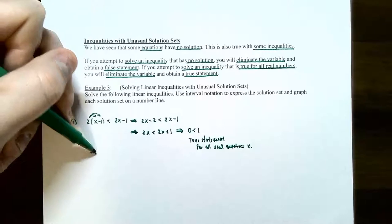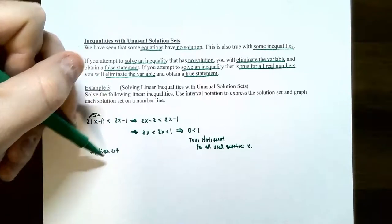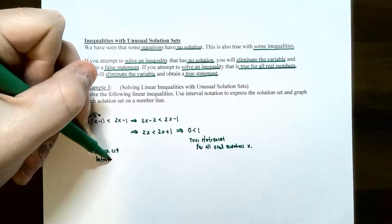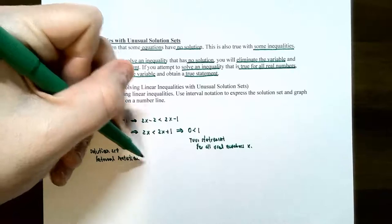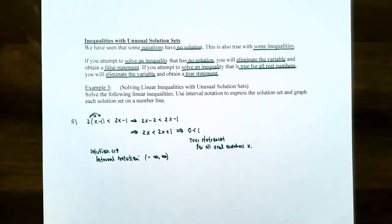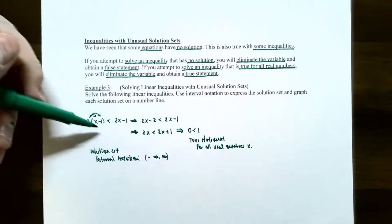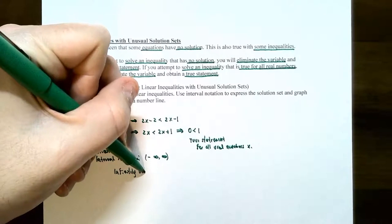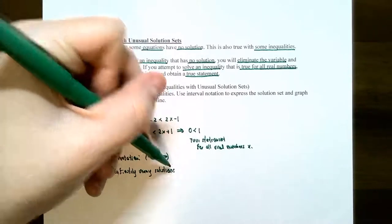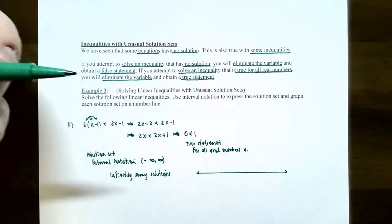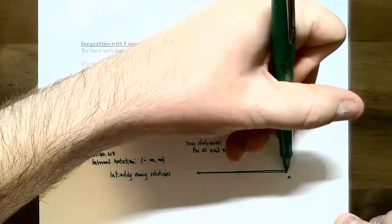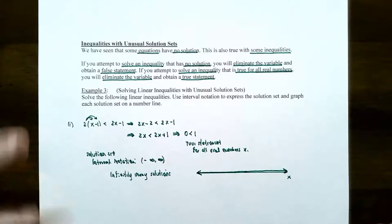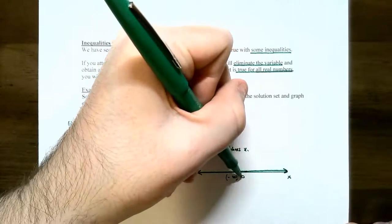So the solution set is the set of all real numbers, and in interval notation that would be negative infinity to infinity. The set of all real numbers are solutions to this inequality — it doesn't matter what the value of x is. If you plug in any value of x, you will get a true statement, meaning infinitely many solutions. On the number line, the entire number line would be shaded to the right and to the left, representing all real numbers, written as negative infinity to infinity with parentheses.